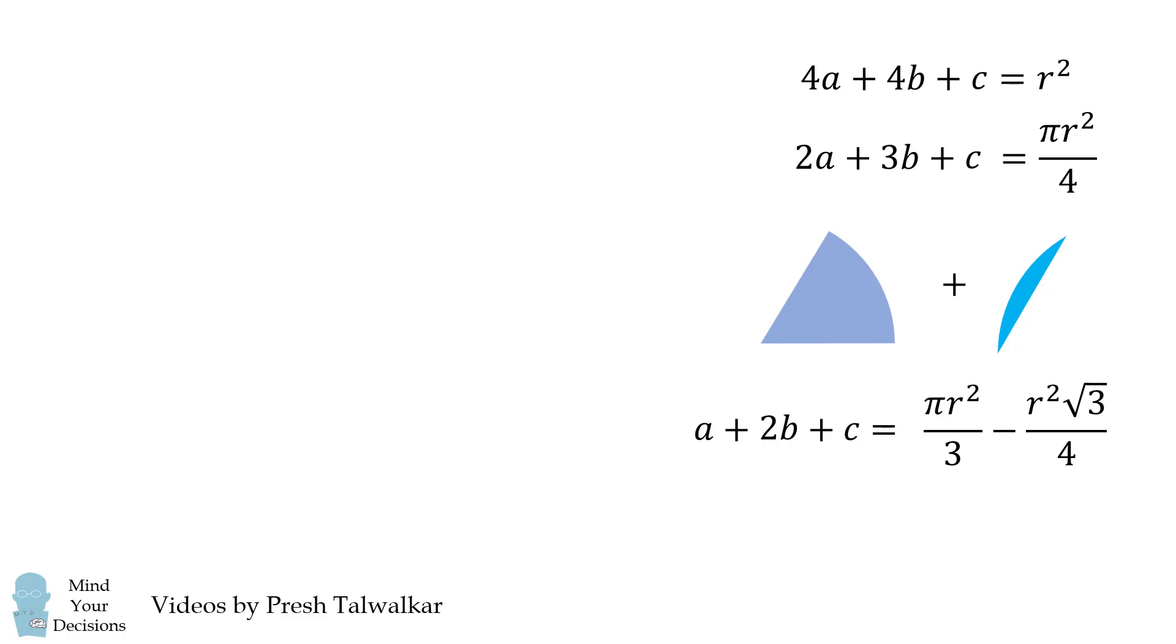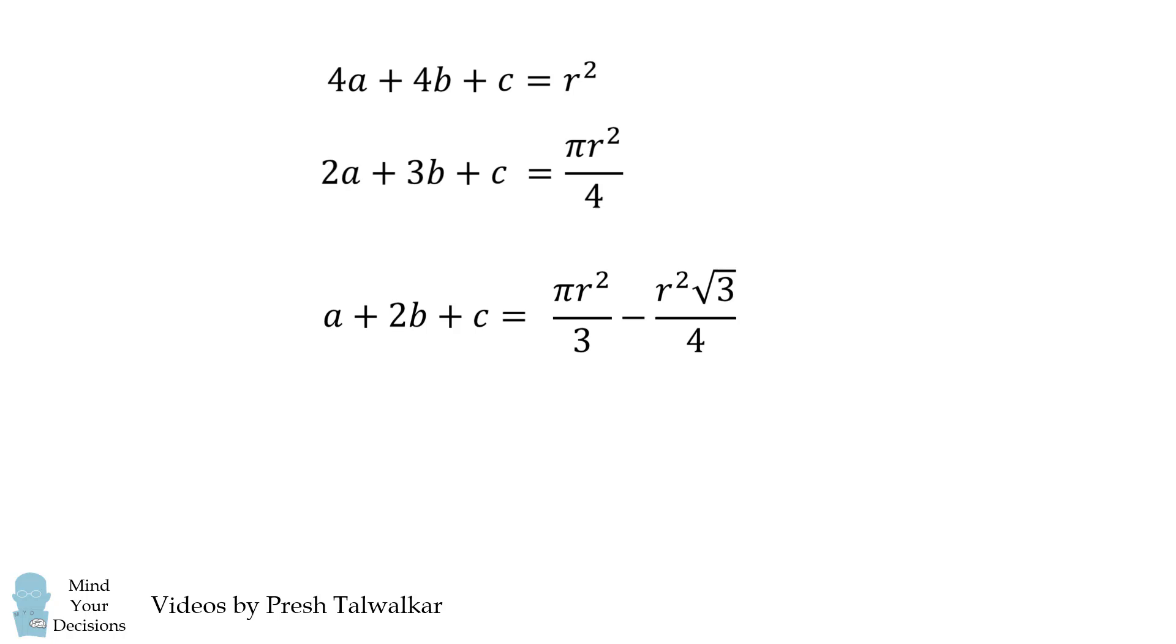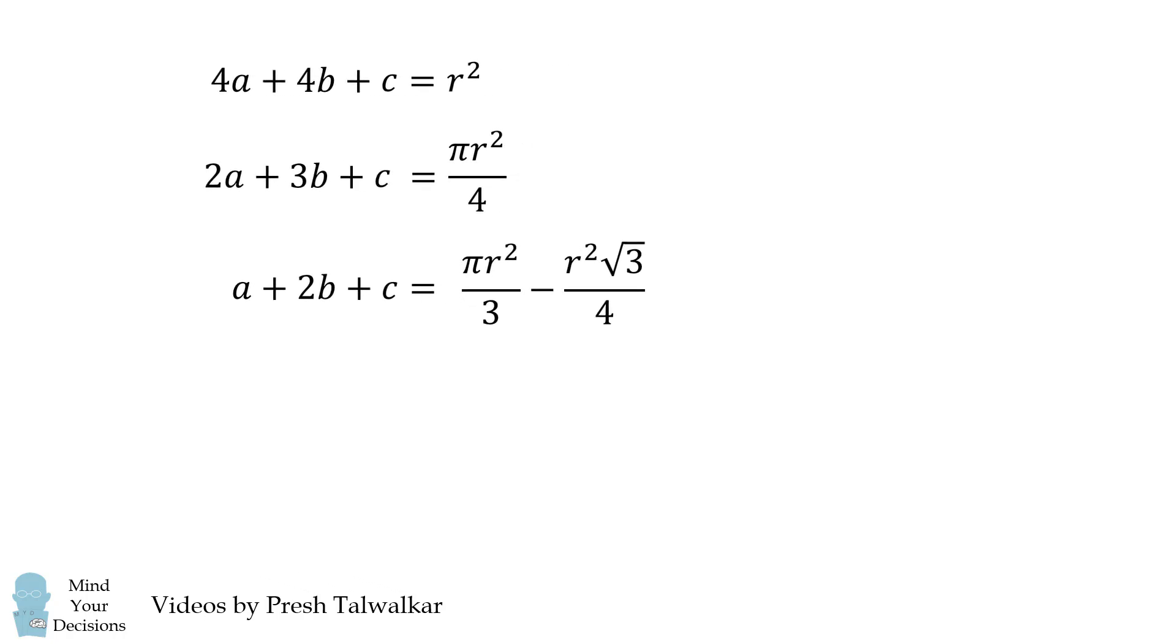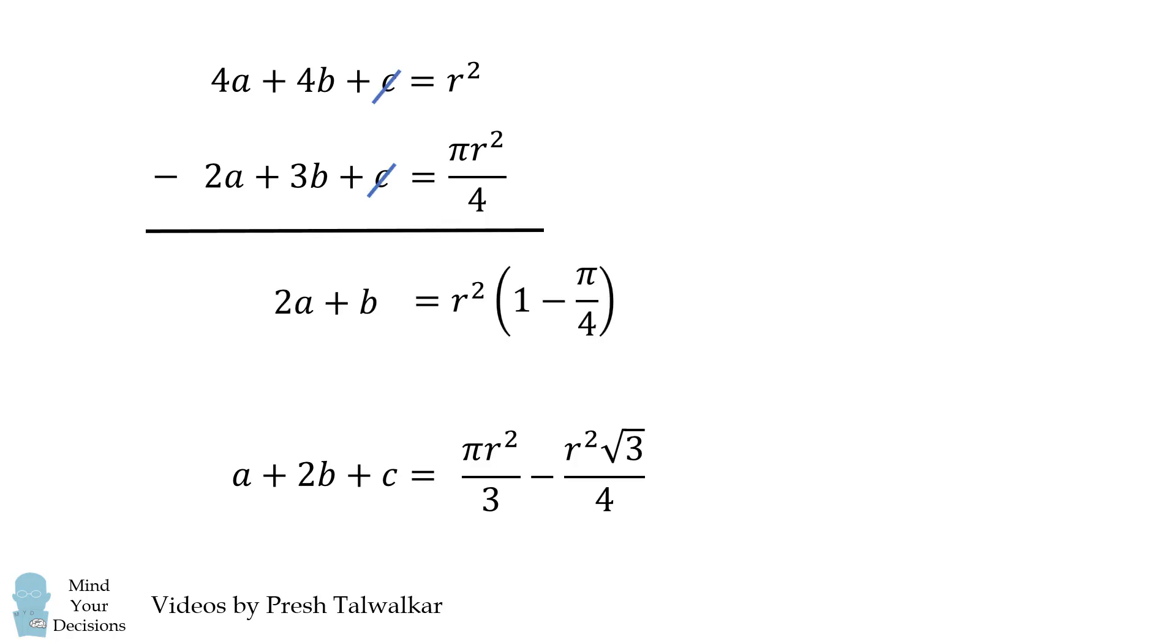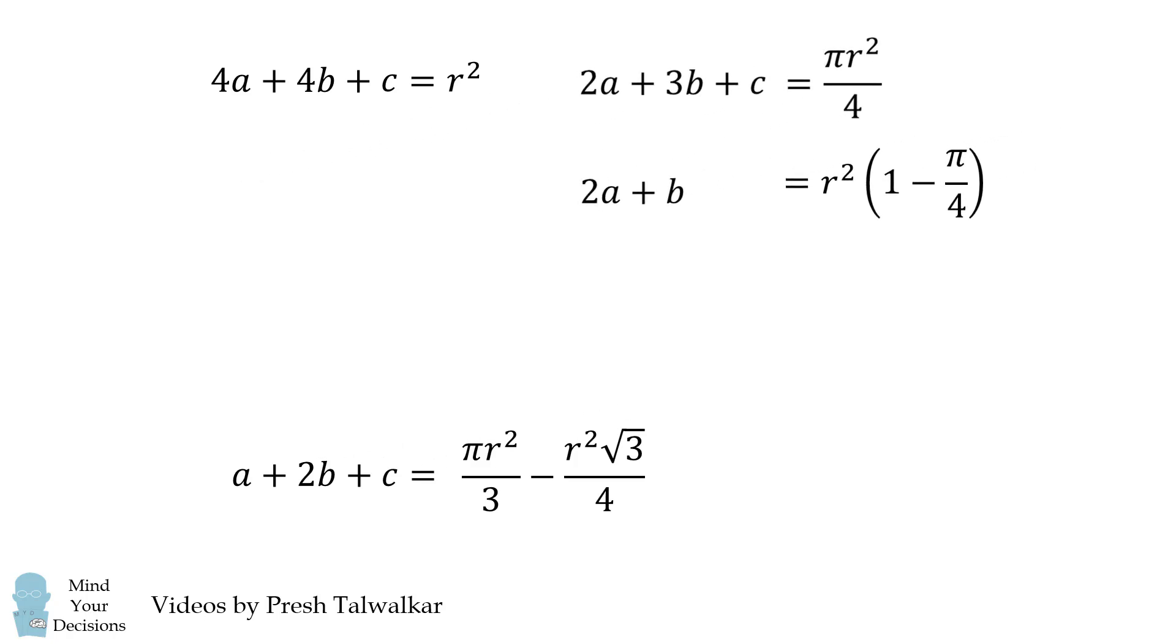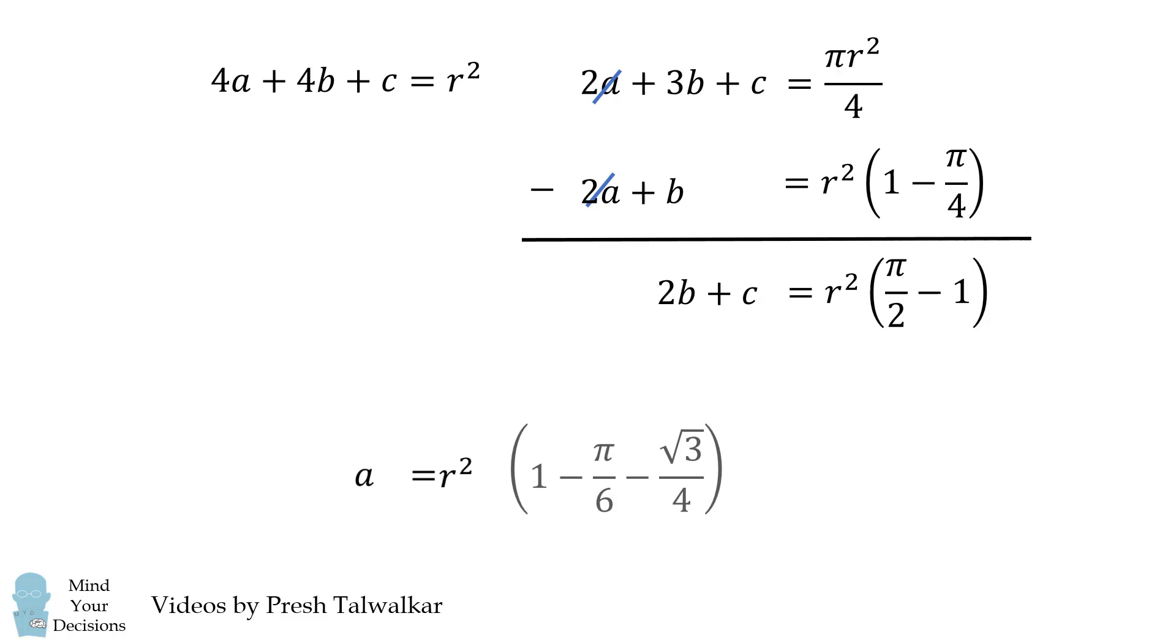We now have three equations for three variables, and we can very carefully solve for a, b, and c. First, we'll eliminate c by subtracting the second equation from the first equation. Then, we'll eliminate 2a by doing the following subtraction. We end up that 2b plus c is equal to the following, which we'll substitute into this last equation. This is an equation only in a, so we'll solve for the variable a.